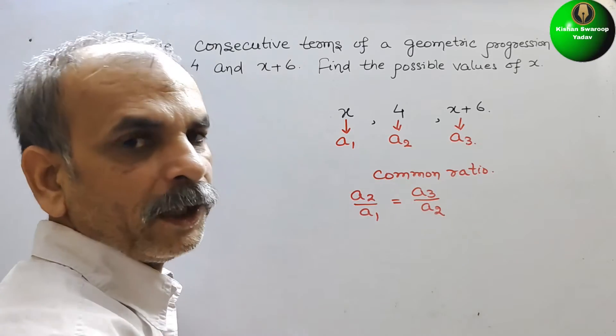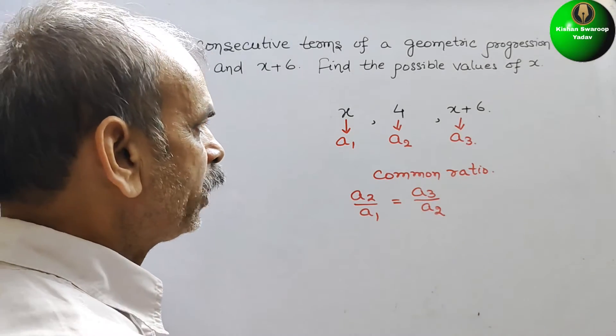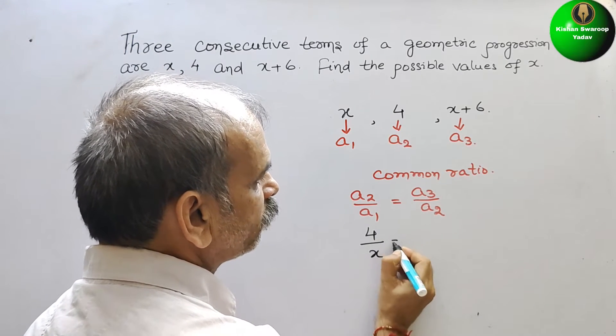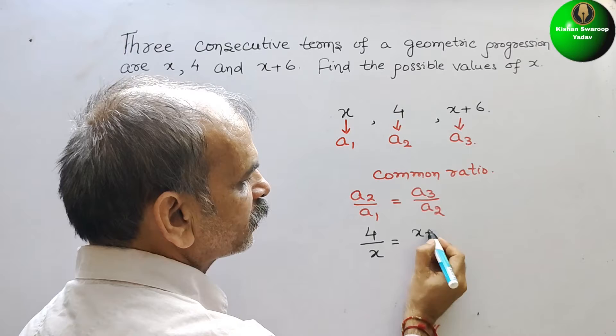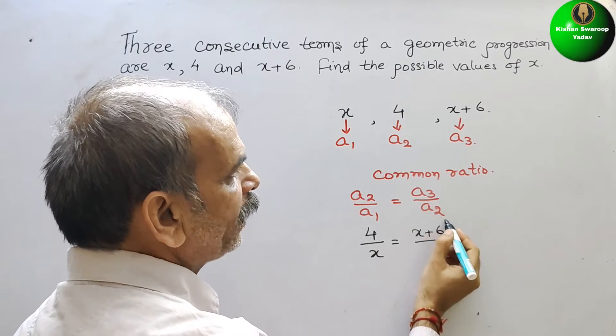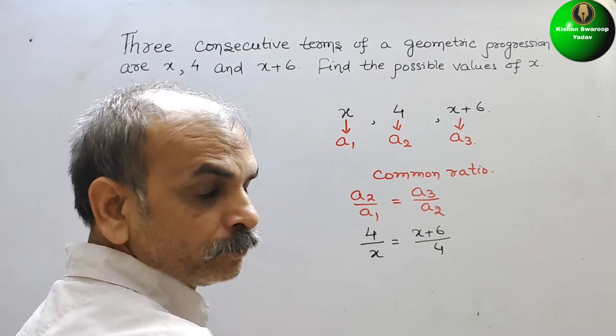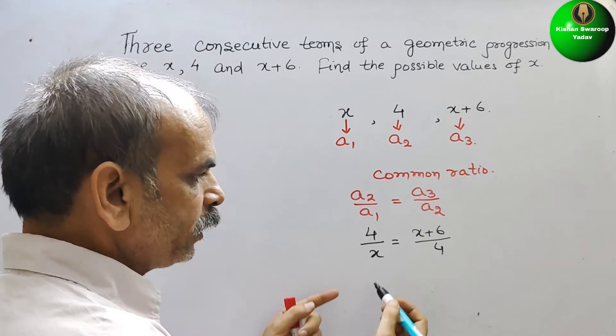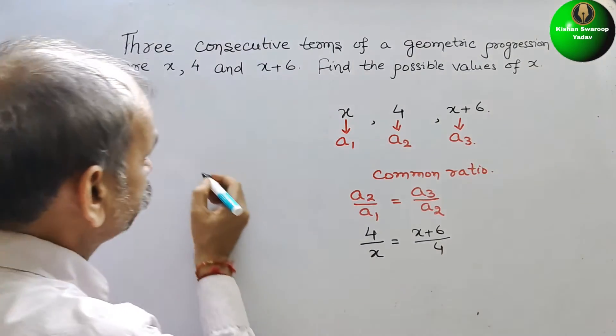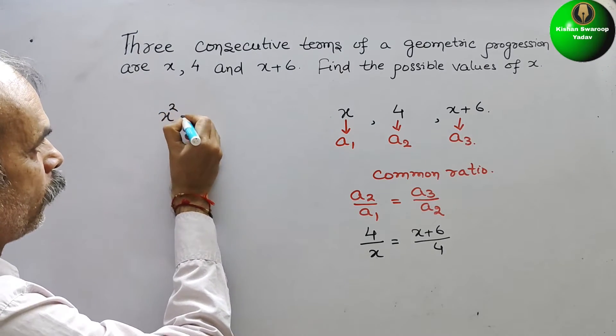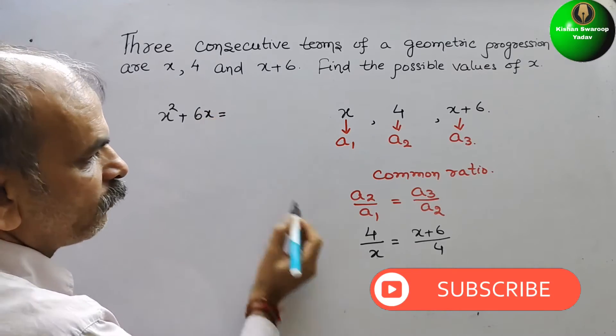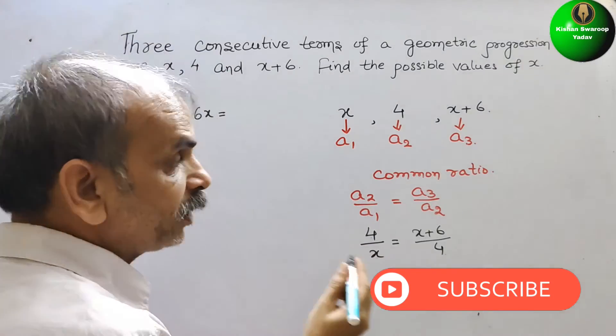Now substitute the value here. So we will get 4 by x equals x plus 6 by 4. Now go for cross multiplication. You will get x squared plus 6x equals 16.